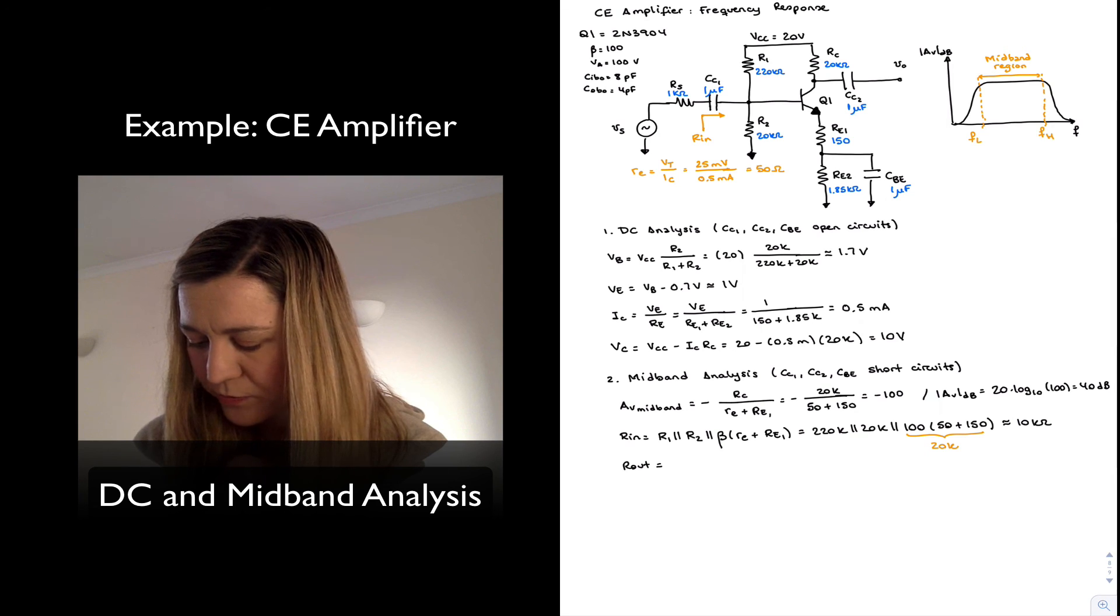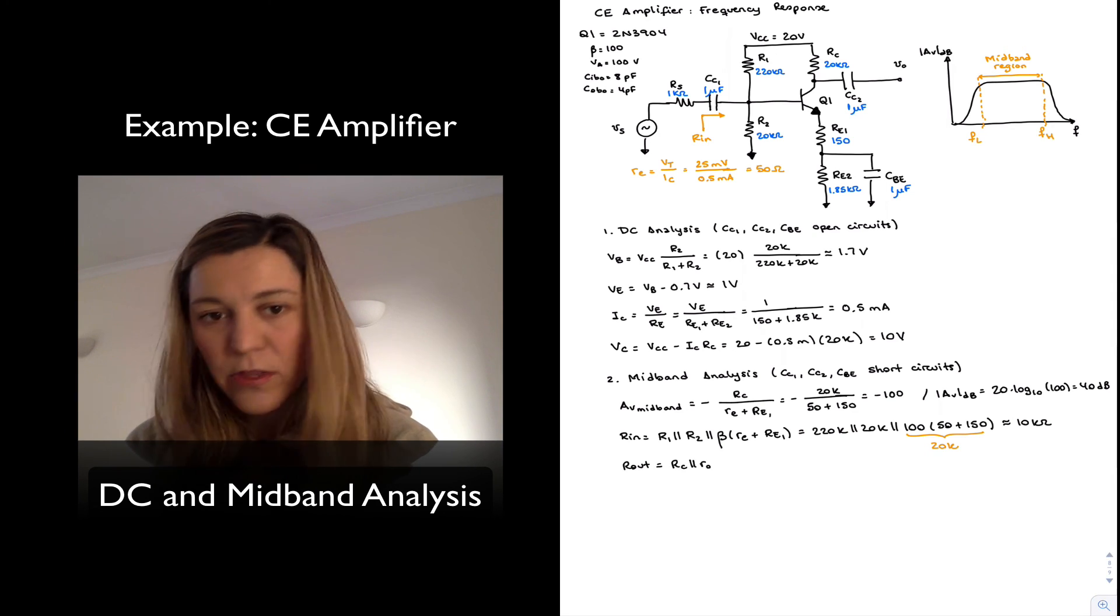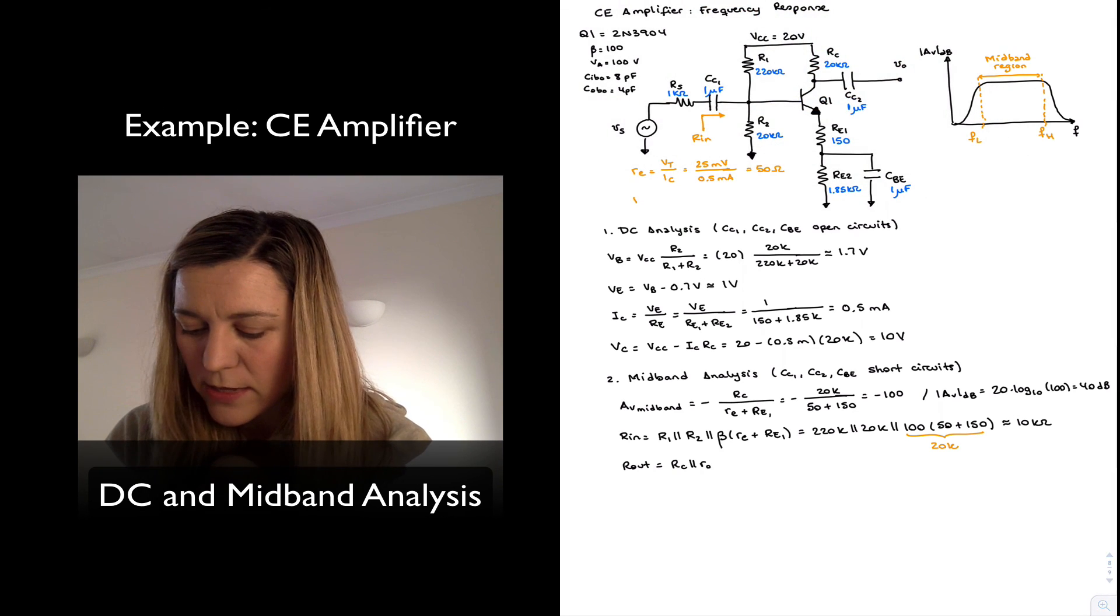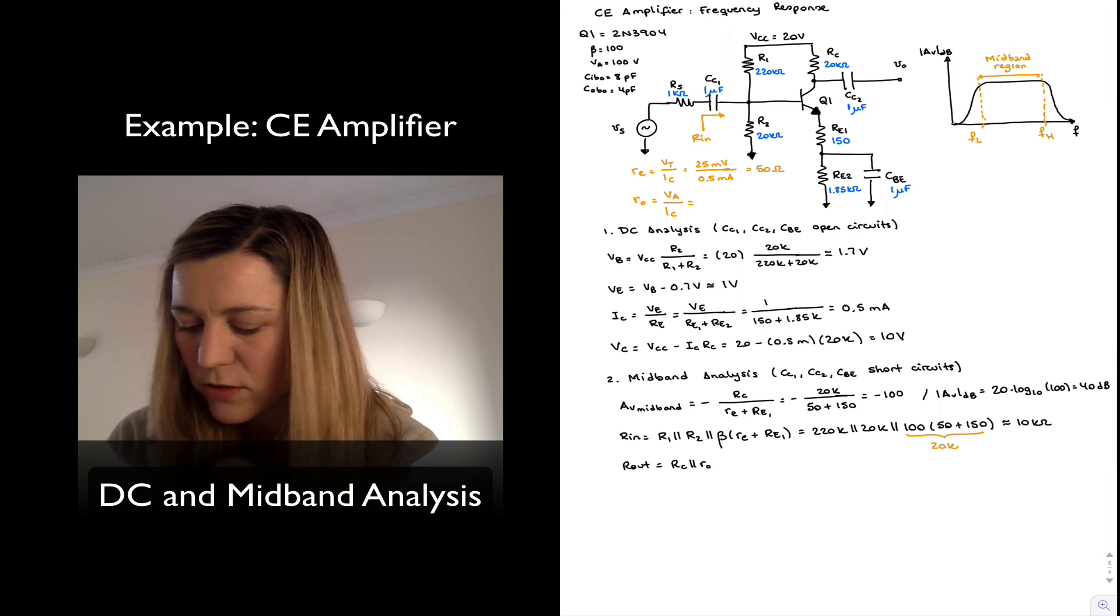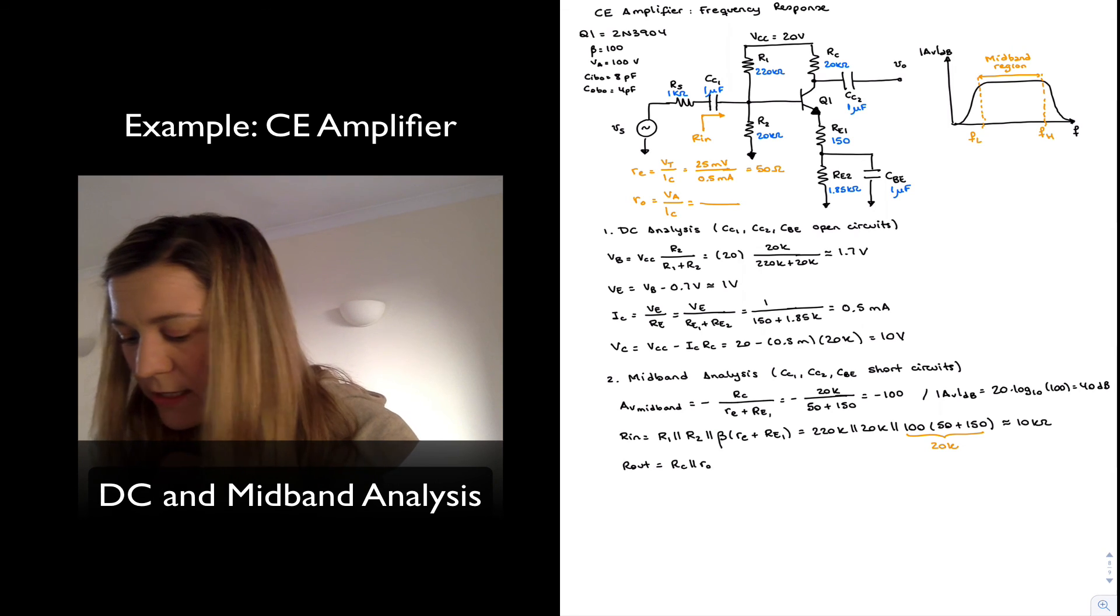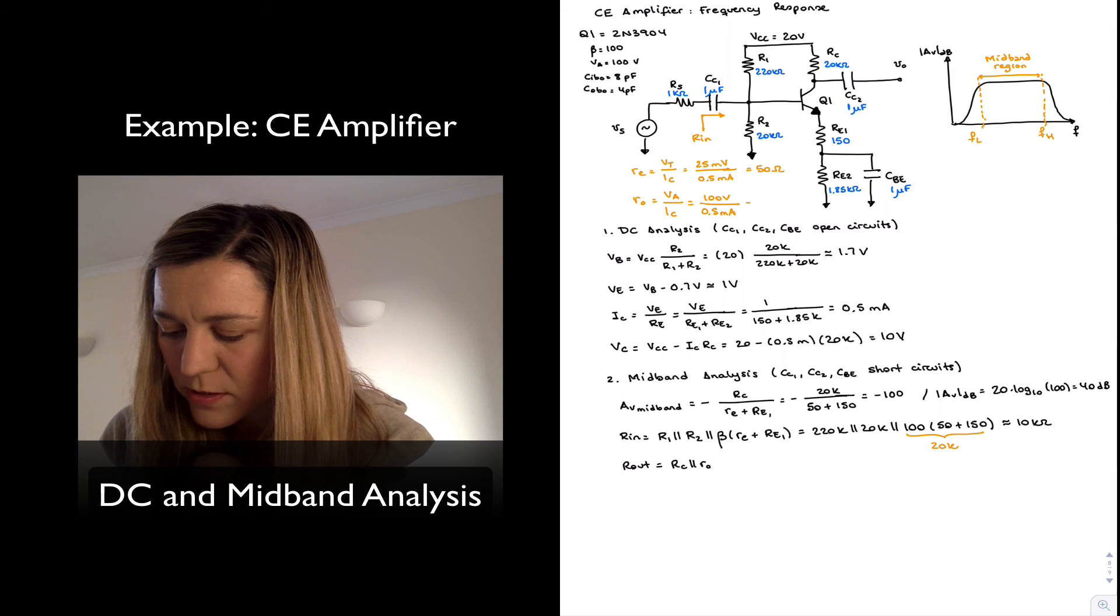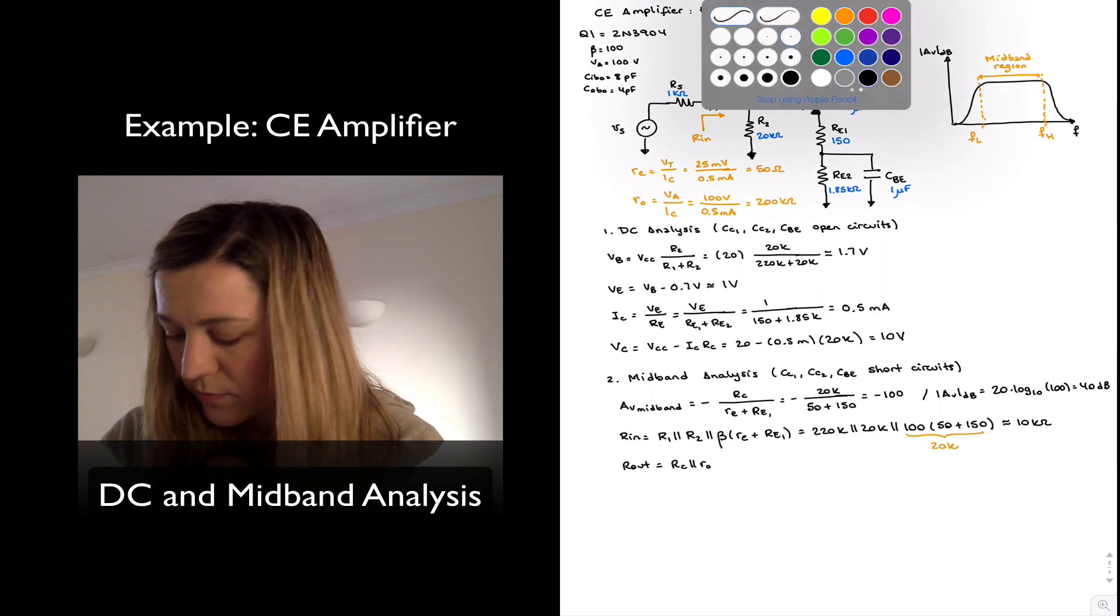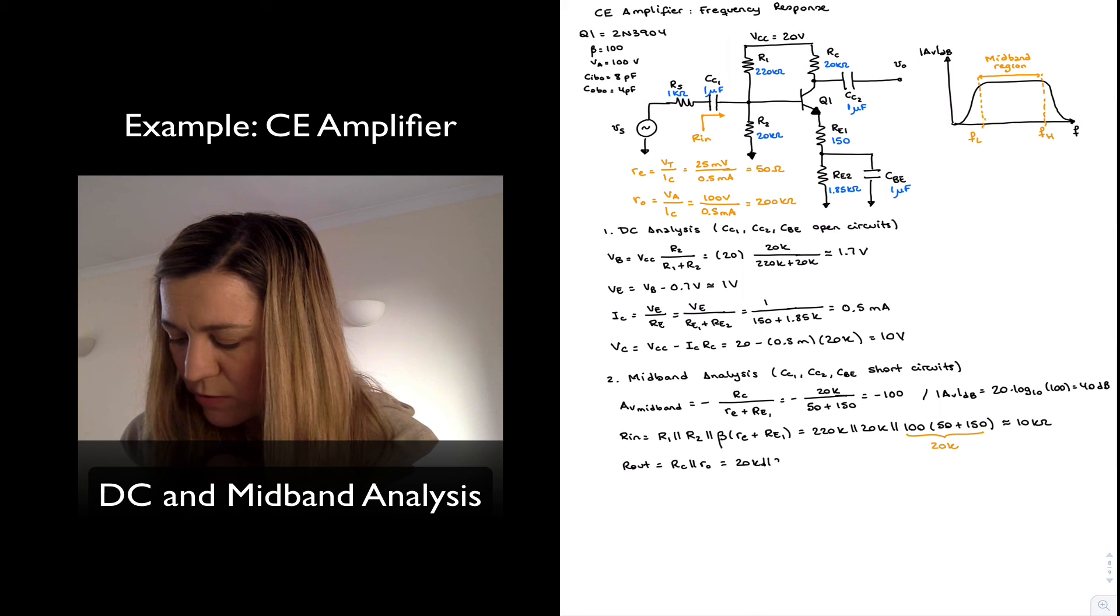My Rout is equal to RC in parallel with little ro, the output resistance of the transistor, which we can also calculate. It's one of the small signal parameters and is equal to the early voltage divided by the quiescent collector current. The early voltage in this case is 100 volts over 0.5 milliamps, so it's 200 kOhms.